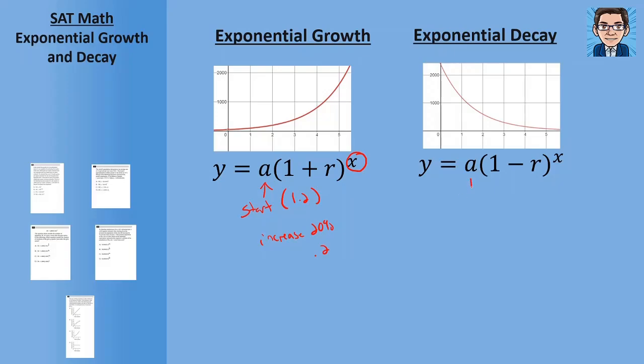And then exponential decay, same thing. We have a starting point. But here we go 1 minus the rate. So again in our example of decreasing by 20 percent or 0.2, we'd go 1 minus 0.2 and we would use 0.8 in here. Another way to look at that is if we're decreasing by 20 percent, we have 80 percent left after each time that we do that decrease.